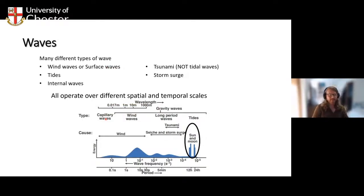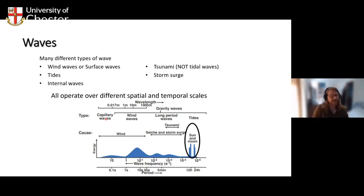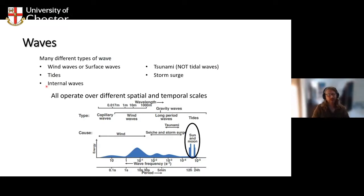Looking briefly at hydrodynamic processes in a bit more detail: when we talk about waves, there are actually many different types within the oceans. What we normally mean are wind waves or surface waves. But tides are also a type of wave, occurring on a very different scale. There are also internal waves occurring at different layers within deeper ocean waters. And then tsunamis - a very different type of wave driven by geological activity - and storm surges are also types of wave.